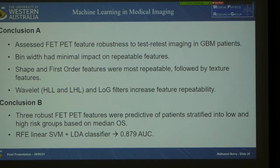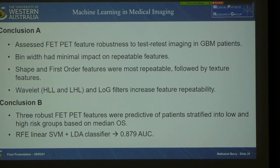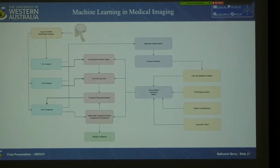To conclude: we assessed FET PET feature robustness to test-retest imaging in glioblastoma patients. We found that bin width had a minimal impact on repeatable features. Shape and first-order features exhibited the highest repeatability, followed by textural features, consistent with the literature, and wavelet and log filters increased feature repeatability. For the secondary conclusion, we found three FET PET features predictive of patient stratification into low and high risk groups based on overall survival, and identified our best performing classifier.